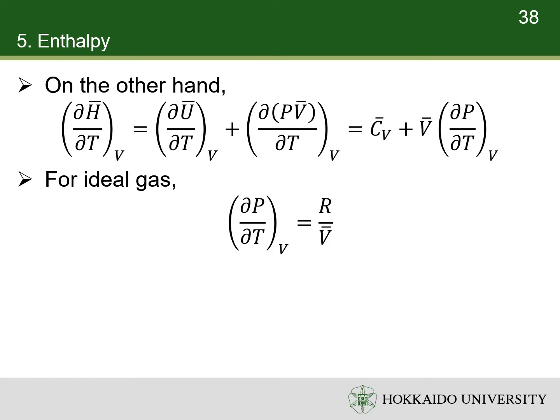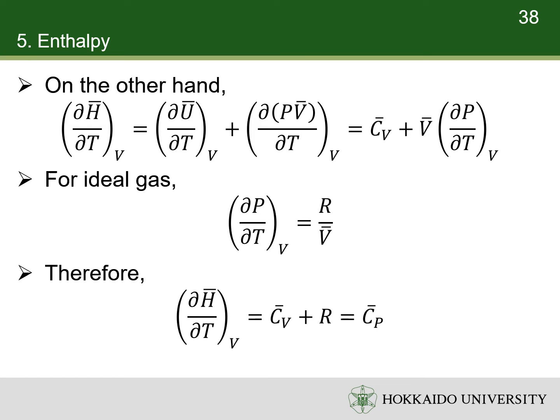For an ideal gas, the relationship among pressure, temperature, and volume is known. Therefore, the partial derivative of its enthalpy with respect to temperature with volume held constant is also the heat capacity at constant pressure.